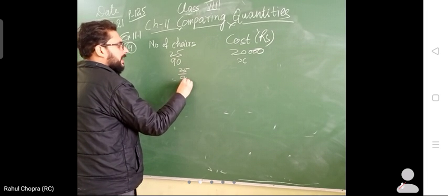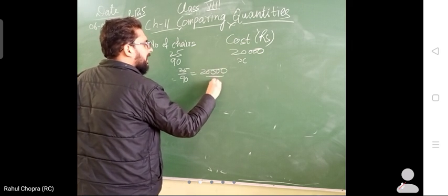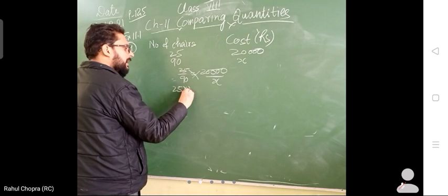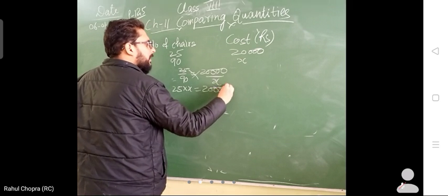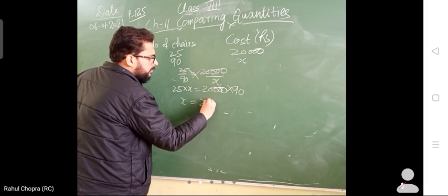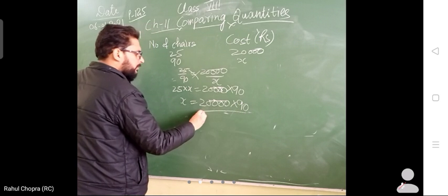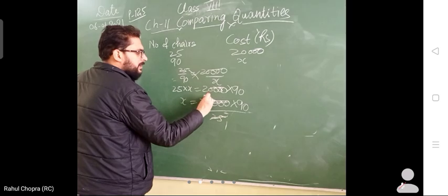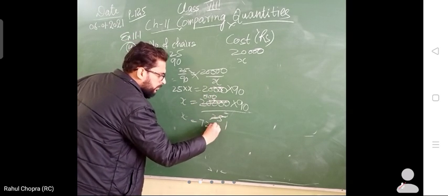25 upon 90 is equal to 20,000 upon x. By doing cross multiplication, 25 into x is equal to 20,000 into 90. X is equal to 20,000 into 90 over 25. 25 into 1, 25 into 8. X is equal to 72,000.